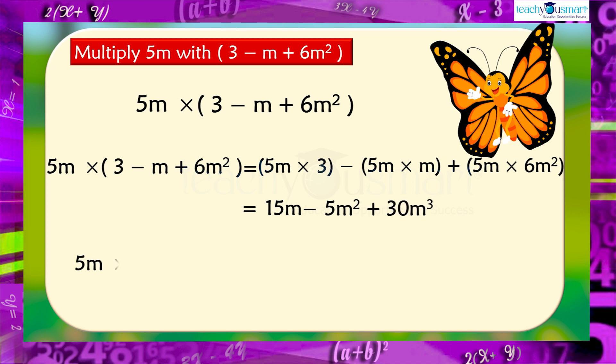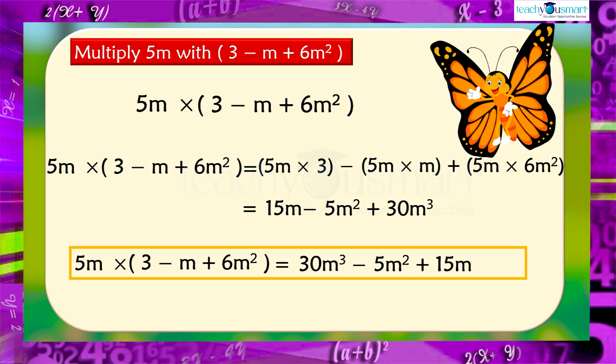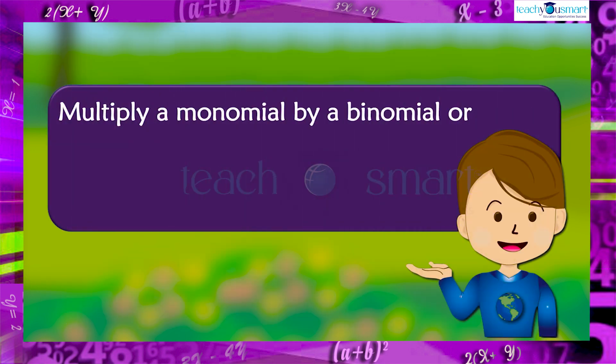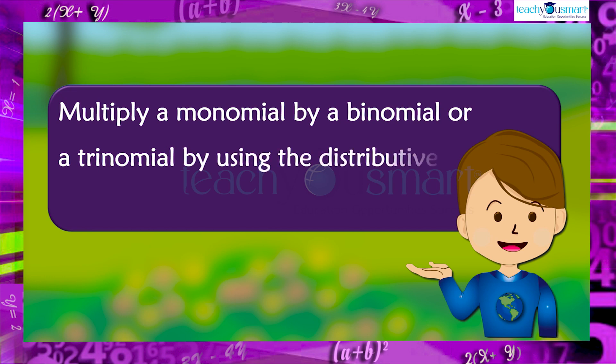That is, 5m multiplied by 3 minus m plus 6m² equals 30m³ minus 5m² plus 15m. So we can multiply a monomial by a polynomial using the distributive property.